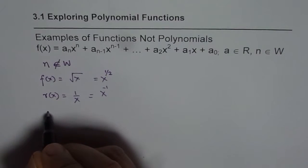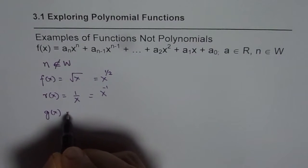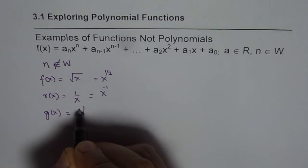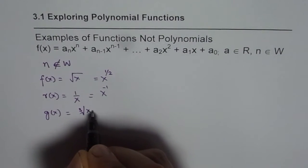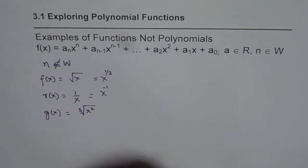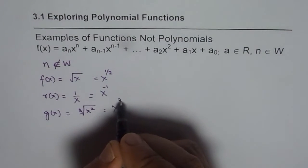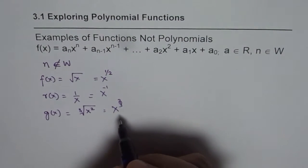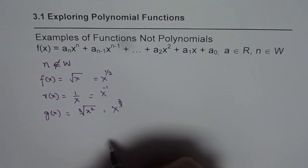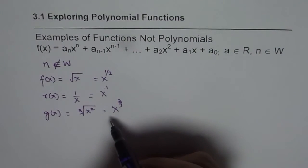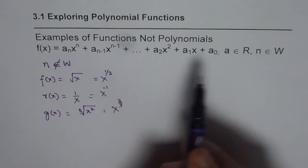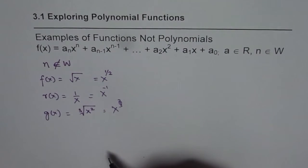Similarly, we can have some other function. Let us say g(x) is equal to cube root of, let us say, a radical function. So here it is x to the power of 2 over 3, which is also not a whole number. So these examples do not comply with exponent being a whole number, so these are not polynomials. You can give many more like this.